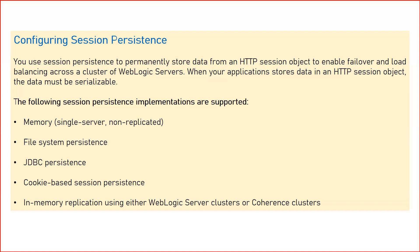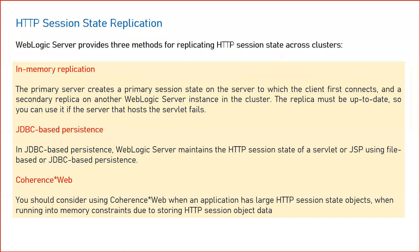When we talk about memory, this is a single-server application that will not be replicated — it is rarely used. File system means your data will be stored somewhere in the file system. JDBC means your session data will be stored in a database. Cookie-based means your data will be stored in the cookies. In-memory replication means your session data will be stored in the runtime memory of your server.